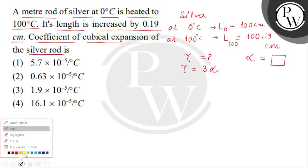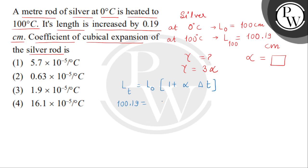Children, first of all, we will apply the formula. Lt equals to L0 within bracket 1 plus alpha multiplied by the change in temperature. So Lt value is 100.19, L0 value is 100 within bracket 1 plus alpha multiplied by 100.